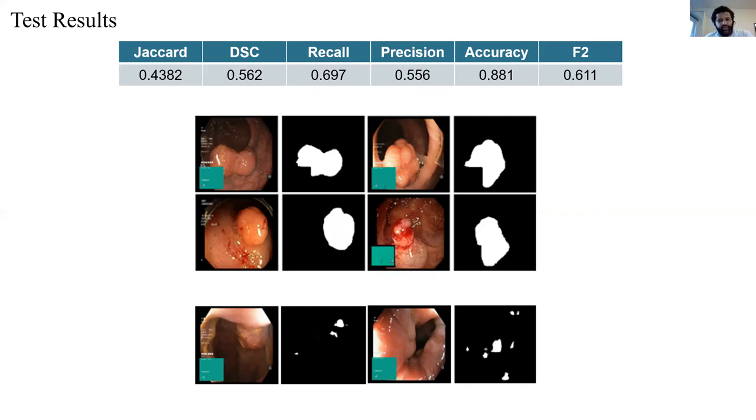To some extent, we can speculate that when there are sharp edges around the polyp, the model works fairly well and fails otherwise.